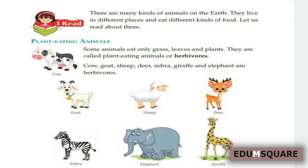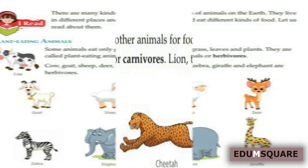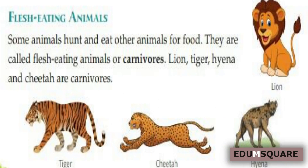The second type is flesh-eating animals. Some animals hunt and eat other animals for food. They are called flesh-eating animals or carnivores. Such animals eat the flesh of other animals. Lion, tiger, hyena and cheetah are carnivores.